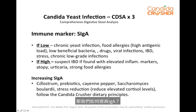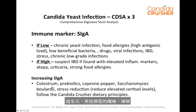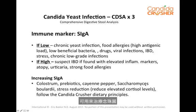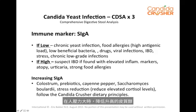So how do we boost IgA? Colostrum is quite good. Prebiotics — certain types of fibers. Cayenne pepper, Saccharomyces boulardii, which is a beneficial yeast you can have with Candida — don't confuse this with a Candida yeast infection. Reducing elevated cortisol when a person is stressed is very important to increase IgA.